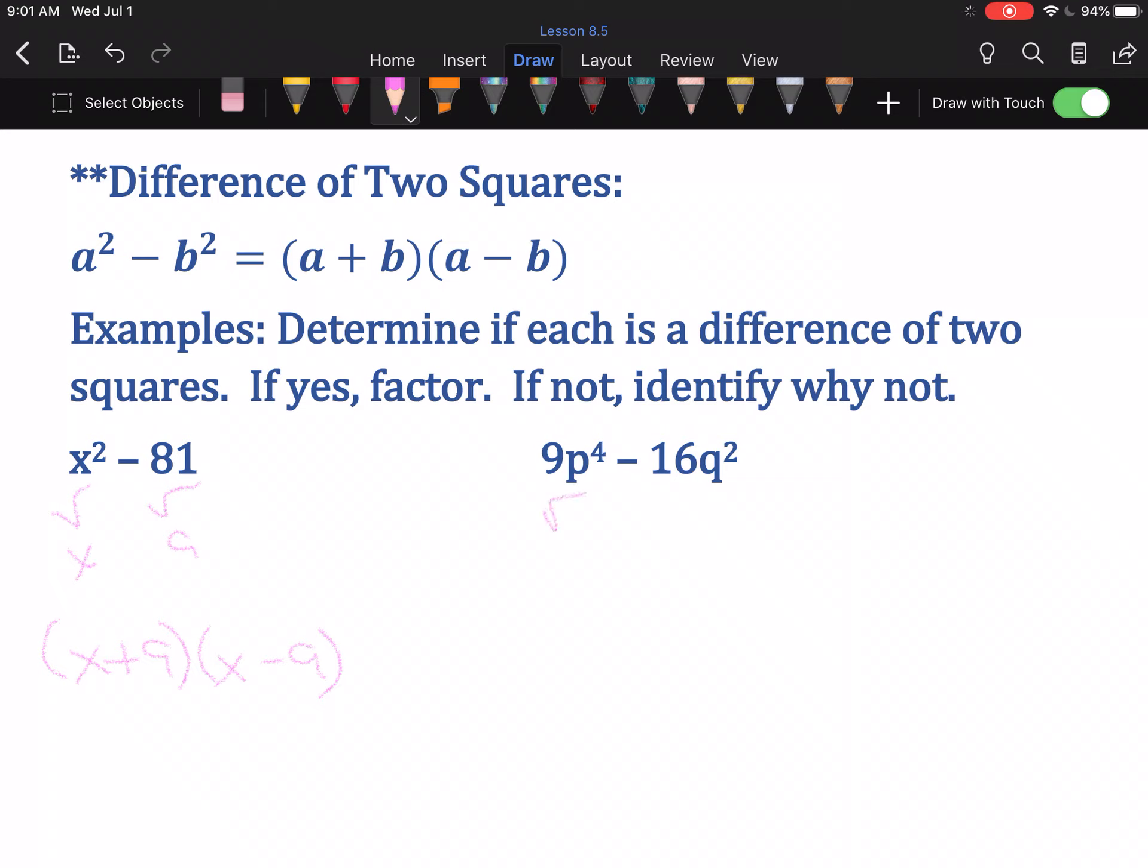The square root of 9p⁴. Well, the square root of 9 is 3. The square root of p⁴ is p². When it comes to exponents, they have a square root if they are even. It is half of the exponent. If the exponent is odd, it doesn't have a square root. Square root of 16 is 4. The square root of q² is q. It is subtraction, so it's going to be (3p² + 4q)(3p² - 4q).